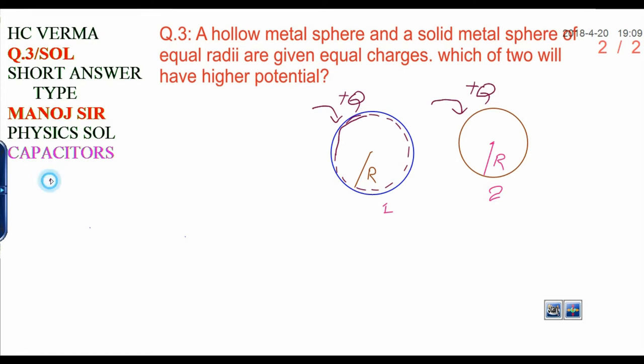By basic definition of potential, potential at a point due to charge Q is written as Q upon 4 pi epsilon 0 into 1 upon R.